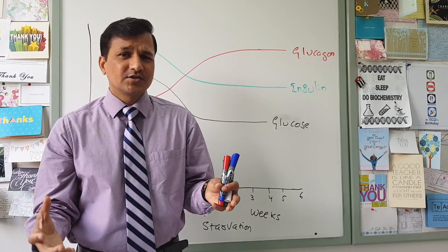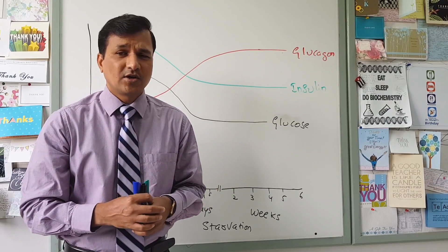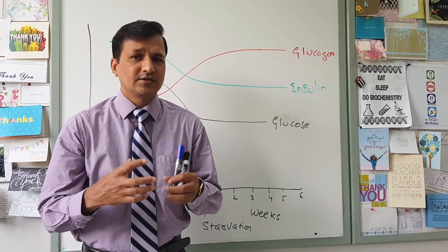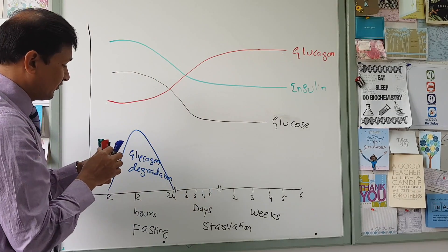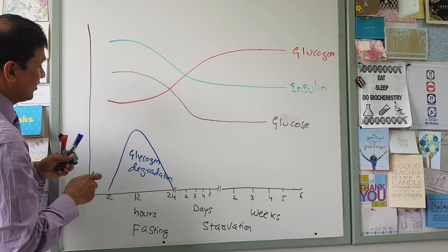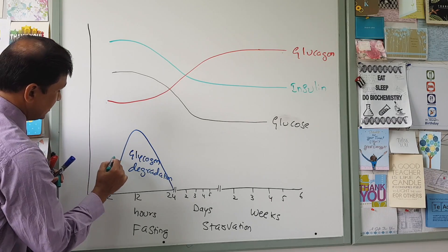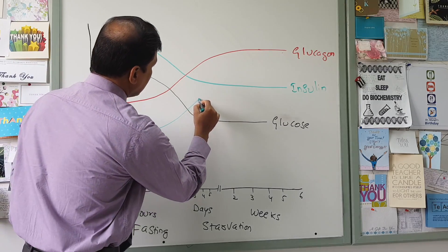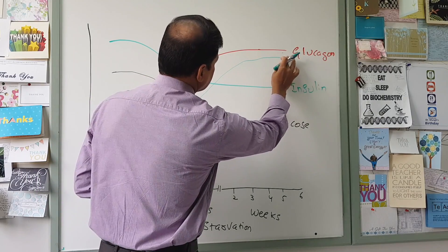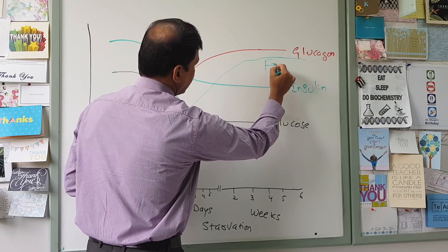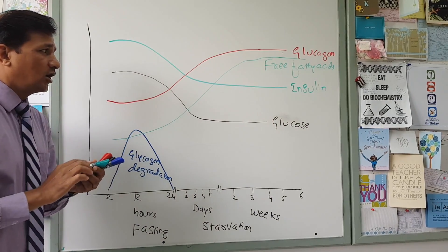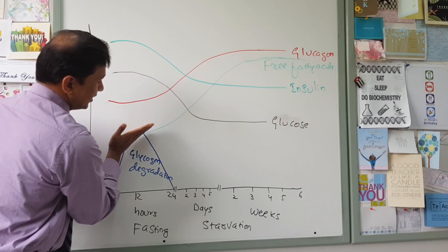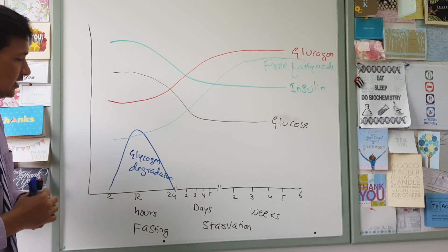Skeletal muscle, cardiocytes, liver, and other tissues will conduct beta oxidation, break down fatty acids, release acetyl-CoA, and acetyl-CoA enters the TCA cycle to give energy. Under the influence of glucagon, free fatty acids flood into the blood. Starting 2 to 3 hours after meals, free fatty acids continuously rise. As fasting continues into starvation, free fatty acids keep rising and are used by almost all tissues except red blood cells and the brain.